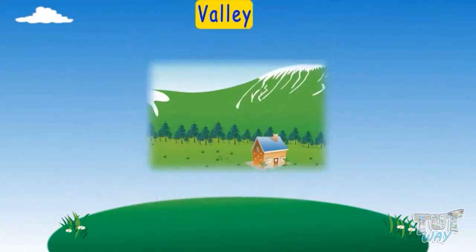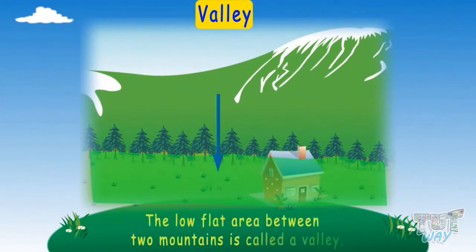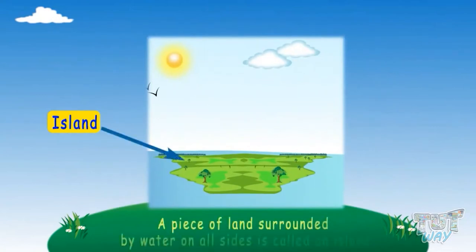The low flat area between two mountains is called a valley. An island is a piece of land surrounded by water on all of its sides.